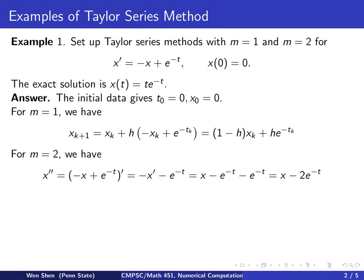For m equals to 2, we know we need to get hold of the second derivative. So x double prime will be x prime prime. Differentiating this expression, giving us negative x prime minus e to the negative t. And we know the x prime is already given here, so we plug that in. Then I'll get x minus e to the negative t, and minus e to the negative t. You can combine it to get x minus 2 e to the negative t.